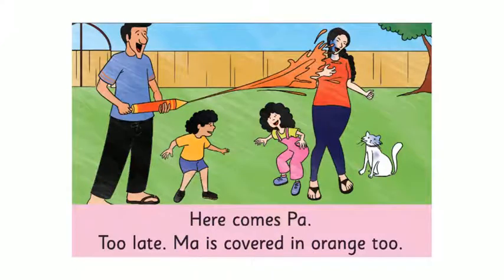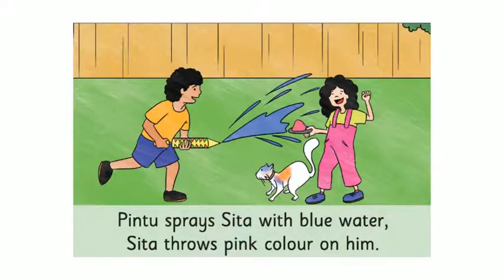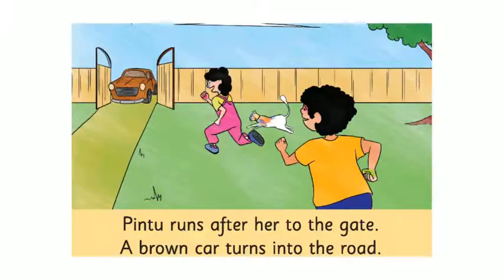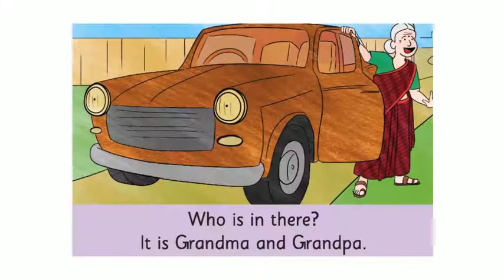Here comes Pa, too late. Ma is covered in orange too. Pintu sprays Sita with blue water. Sita throws pink colour on him. Pintu runs after her to the gate. A brown car turns into the road.